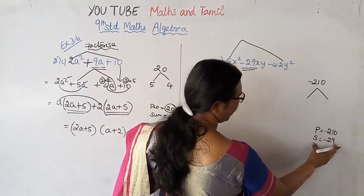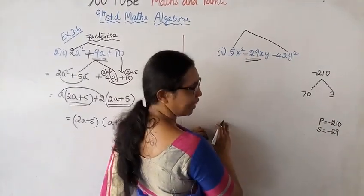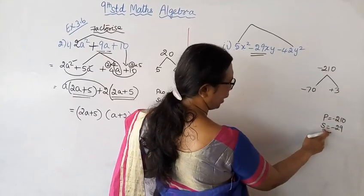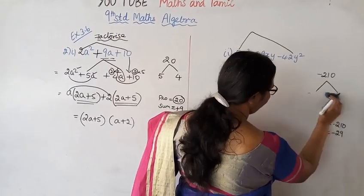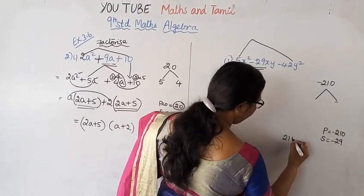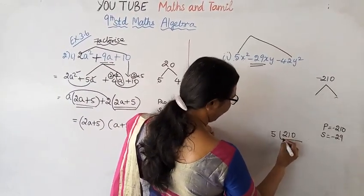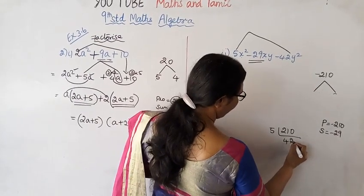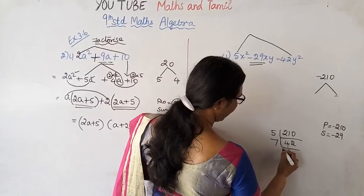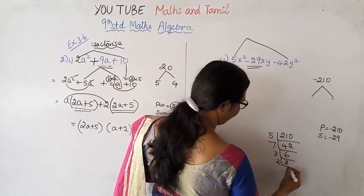We do prime factorization of 210. Minus 29 — one candidate is 70 and 3, giving minus 70 plus 3. Let's check: prime factorization gives 5 fours are 20, 5 twos are 10, then 42 equals 7 times 6. So 2 times 3 times 7 times 5 equals 210.